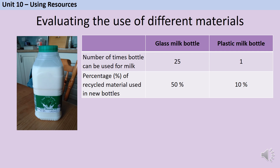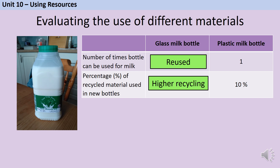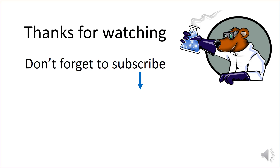Recycling may also come up as part of larger questions elsewhere in the specification. Later in Unit 10, you'll encounter life cycle assessment, where you decide which material is most appropriate for a given use. Questions may provide data about how many times a material can be reused or recycled, and you need to connect that to sustainability. For instance, when choosing a material for milk bottles, you should identify that a glass bottle can be reused 25 times more and contains five times more recycled material — both making it more sustainable, even if plastic has other advantages.